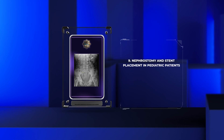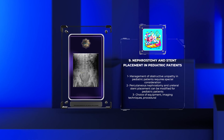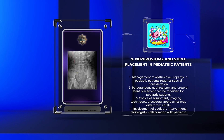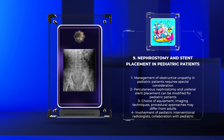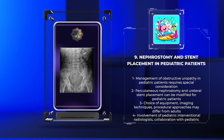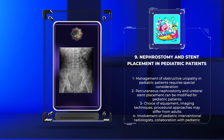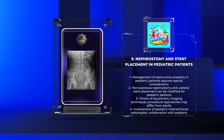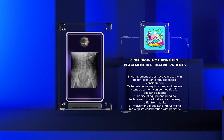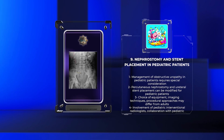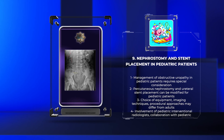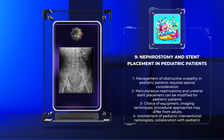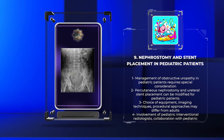The management of obstructive uropathy in pediatric patients requires special consideration due to anatomical differences and unique challenges. Percutaneous nephrostomy and ureteral stent placement techniques can be performed in pediatric patients with modifications to suit their specific needs. The choice of equipment, imaging techniques, and procedural approaches may differ from those used in adults. The involvement of pediatric interventional radiologists and close collaboration with the pediatric urology team are essential for successful outcomes in this patient population.